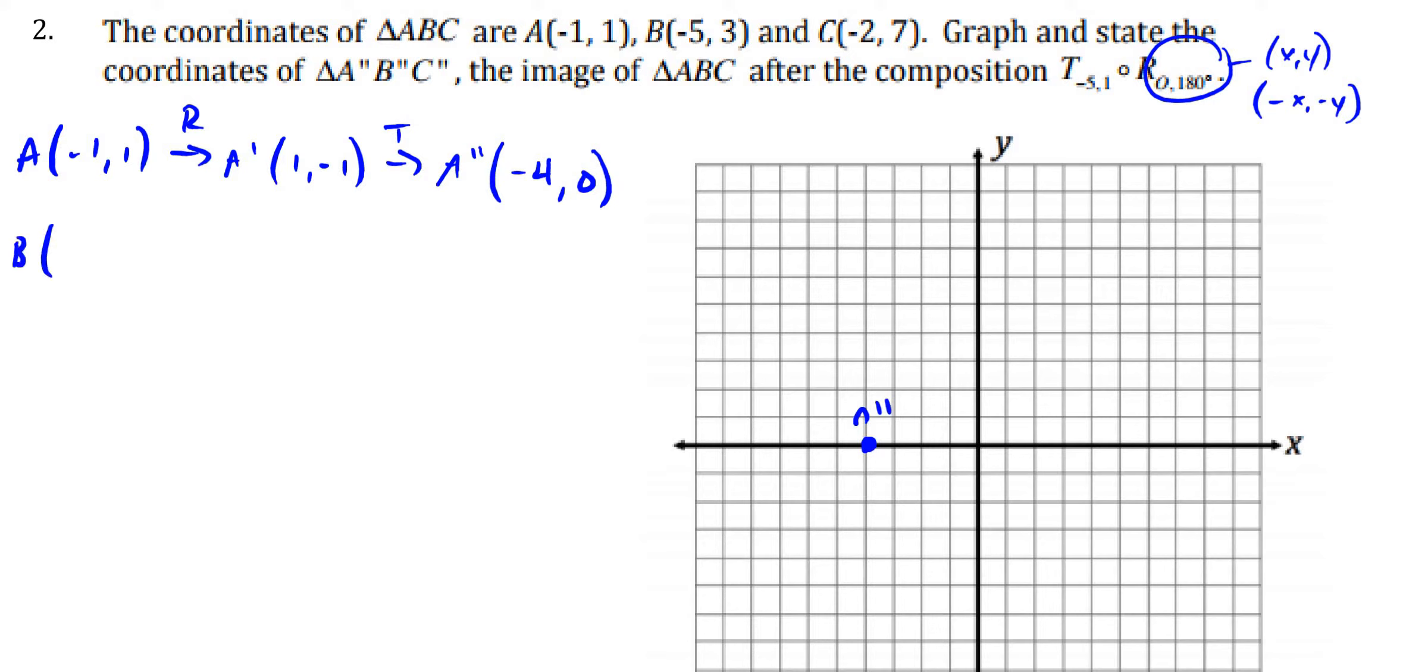If I look at B, negative 5, 3. Well, after the rotation, I'm going to get B prime, which is just 5, negative 3. After the translation, I'm going to get B double prime. If I subtract 5, I get 0, and negative 2.